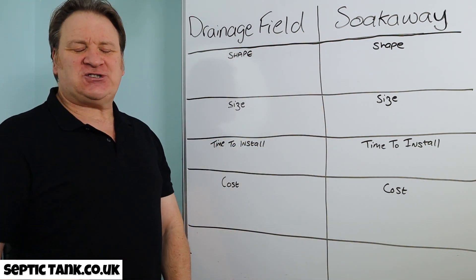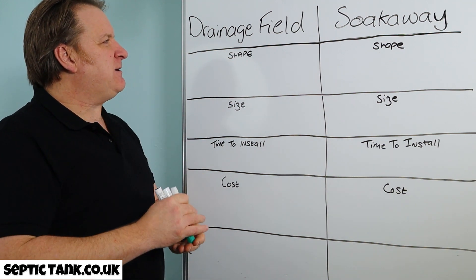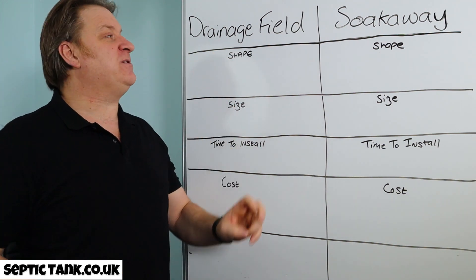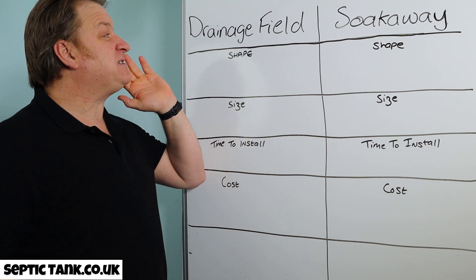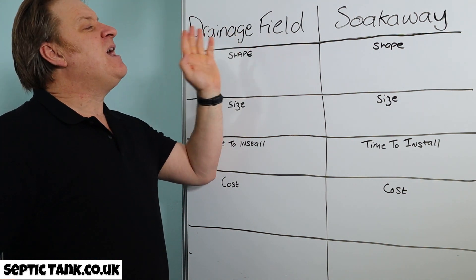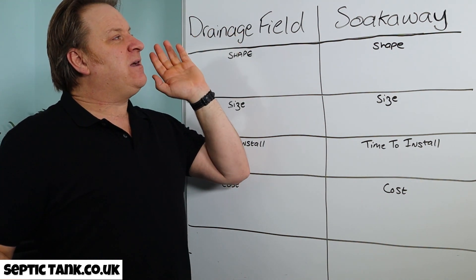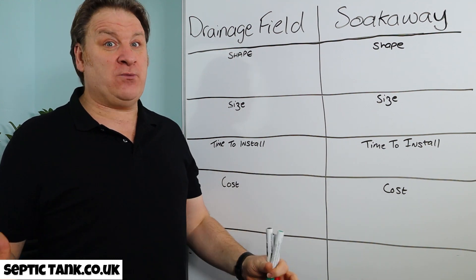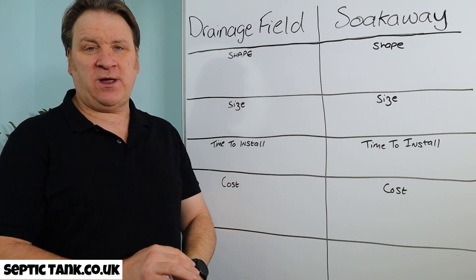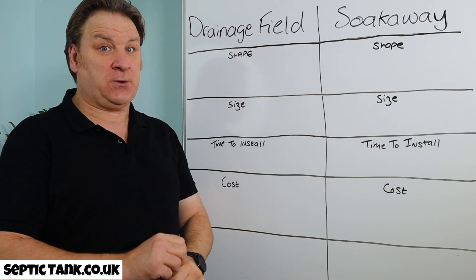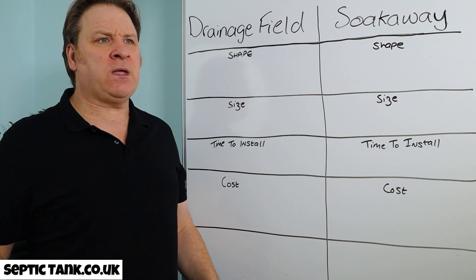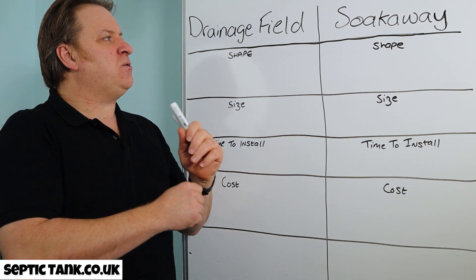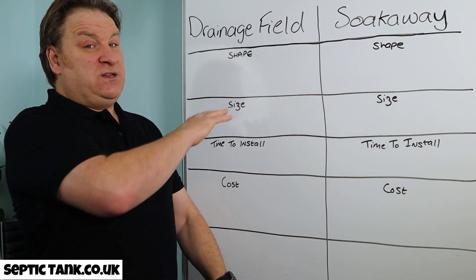All the rules and regulations changed on the 1st of January 2020, and so the correct terminology now is: a septic tank is connected to a drainage field, and a soak away is connected to rainwater — to your gutters — a rainwater soak away. That's how it is now. But just to avoid confusion, let me show you how the words have been used and blurred and merged over the years.